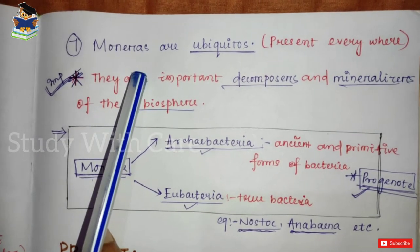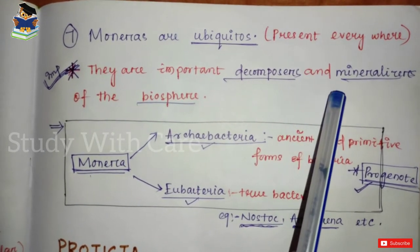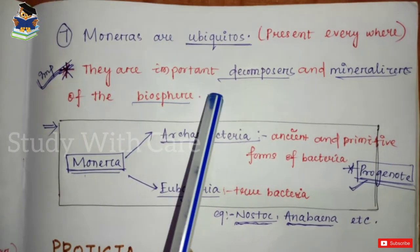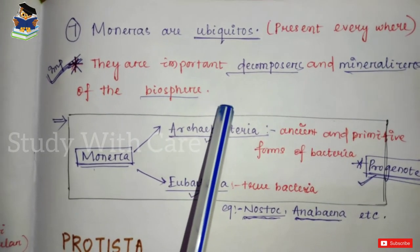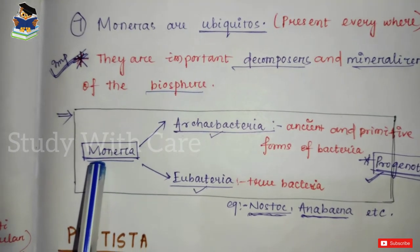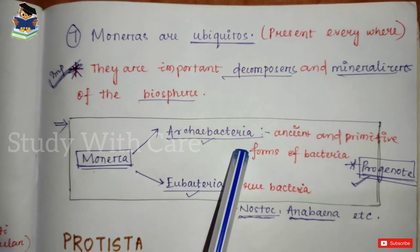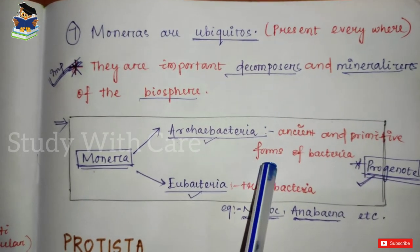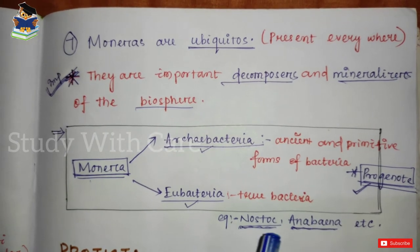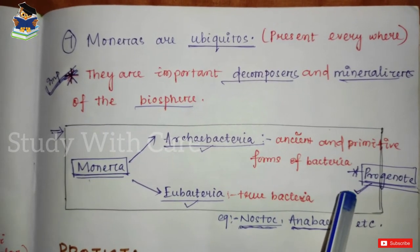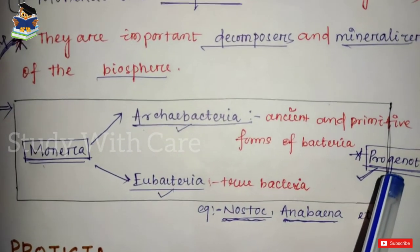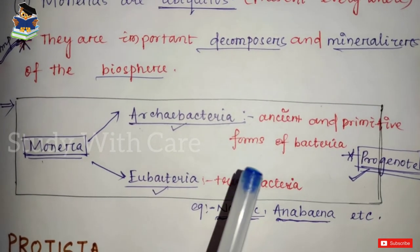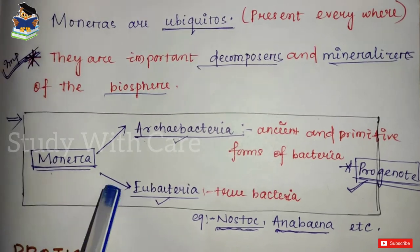If a question asks which are the important decomposers and mineralizers, the answer is monerans — they are the important decomposers and mineralizers of the biosphere. Monera is further divided into two groups: Archaebacteria and Eubacteria. Archaebacteria includes ancient and primitive forms of bacteria, while Eubacteria are the true bacteria — for example, Nostoc, Anabaena, etc. It is believed that the progenote is the ancient form of bacteria from which both Archaebacteria and Eubacteria arose.